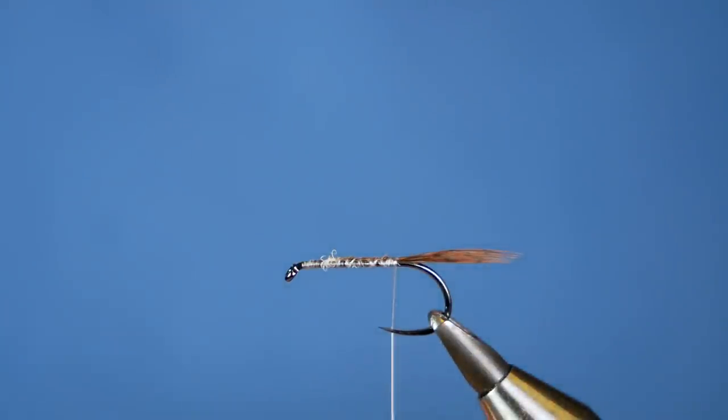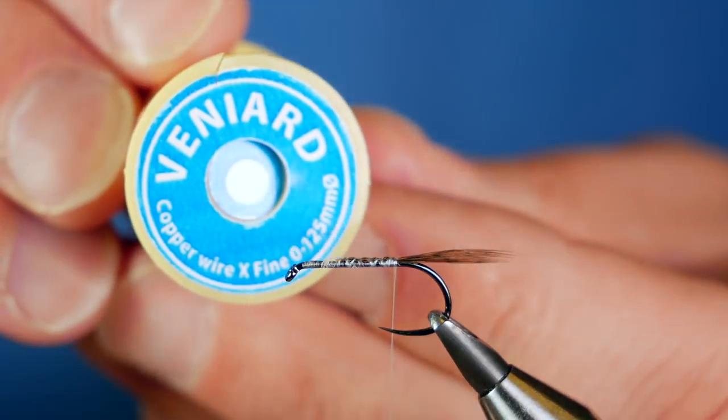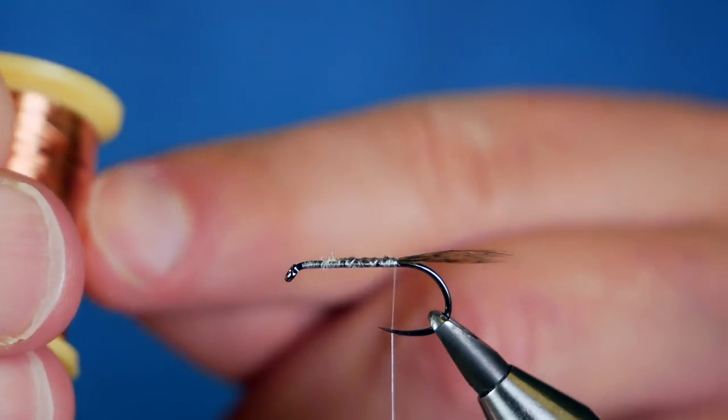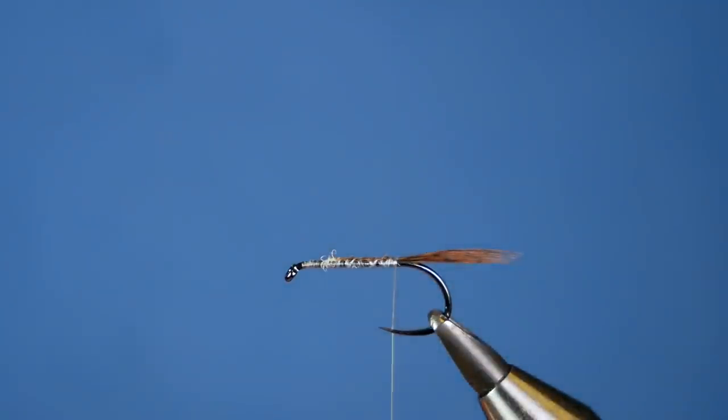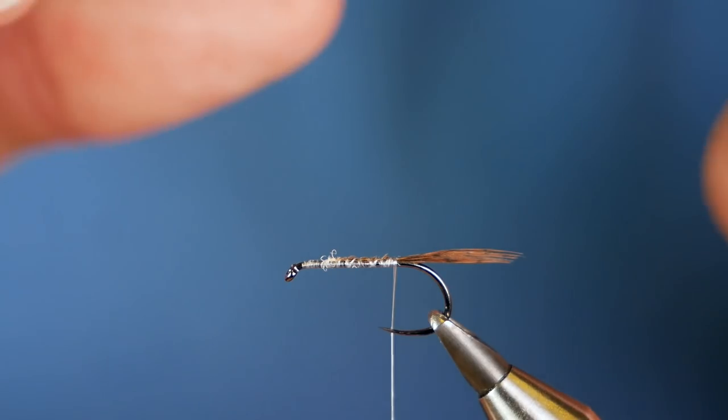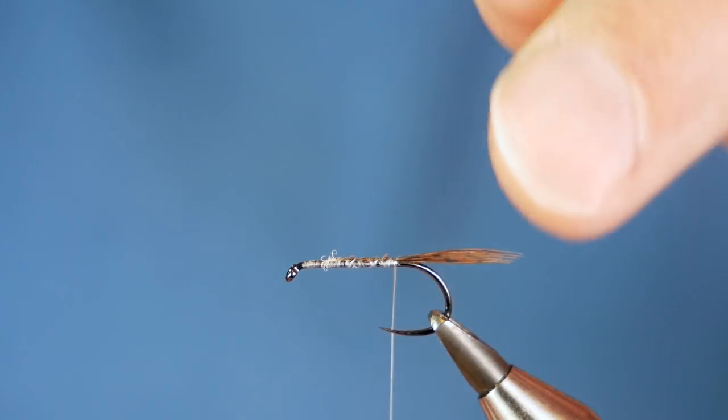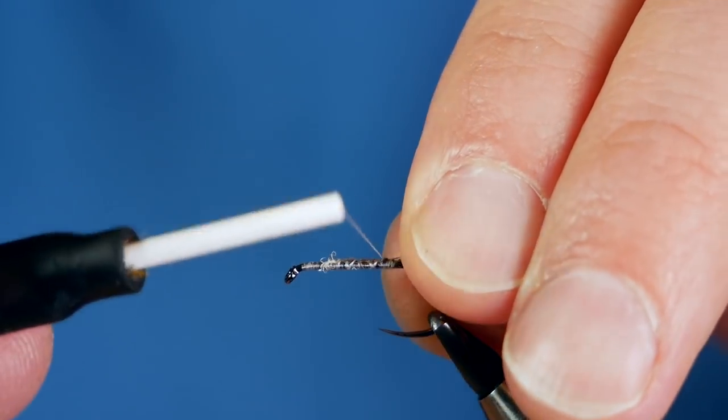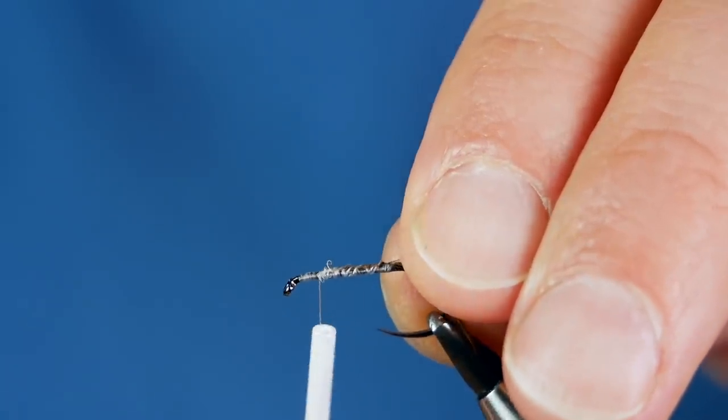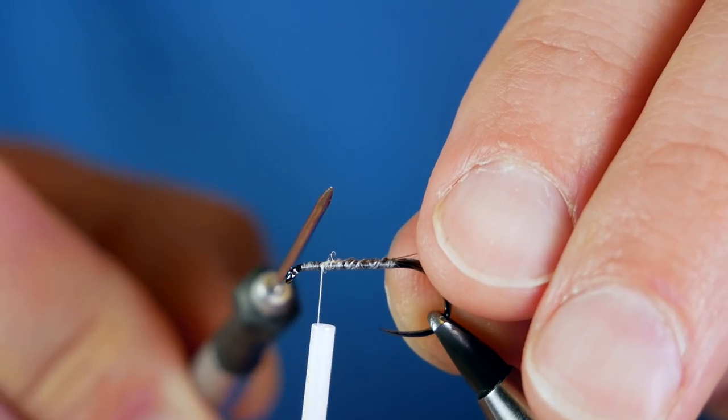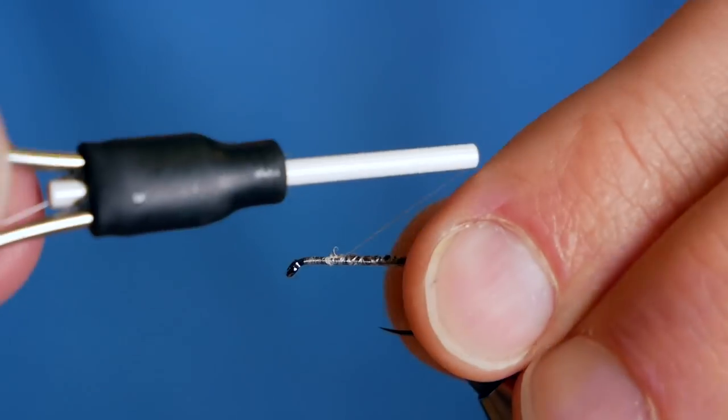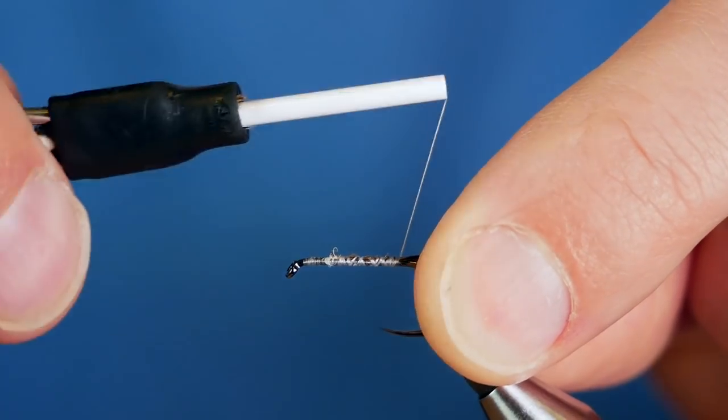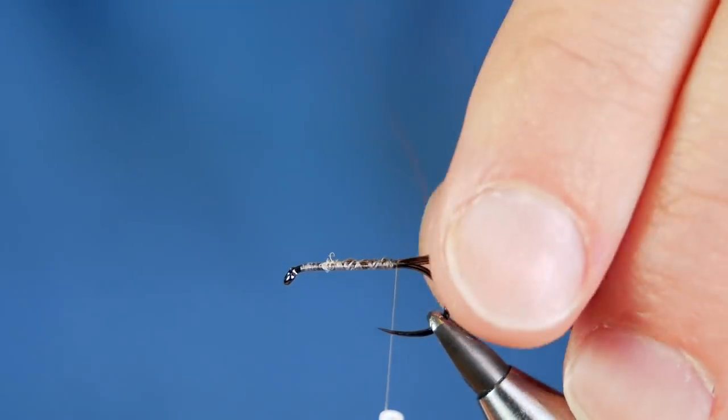Next thing I'm going to do is add my rib, and I'm using some copper wire. This one's from Veniards, and as you can see it's a small. Veniards now call it fine, and it's 0.125 of a millimeter, but basically it's a small wire. They come in various thicknesses, but for this pattern I need the small. So on my side I'm going to catch that in, and I've got the wire coming up to this point. Again, it's to do with keeping the body nice and uniform. Once I've caught it in, I can come back down to the base of the fly, and that tail is looking okay.